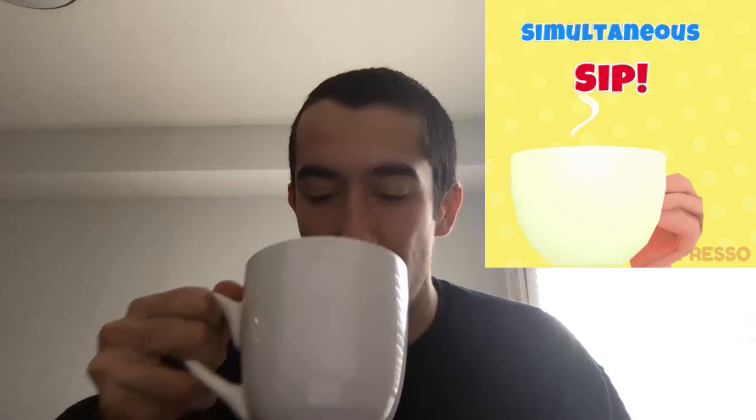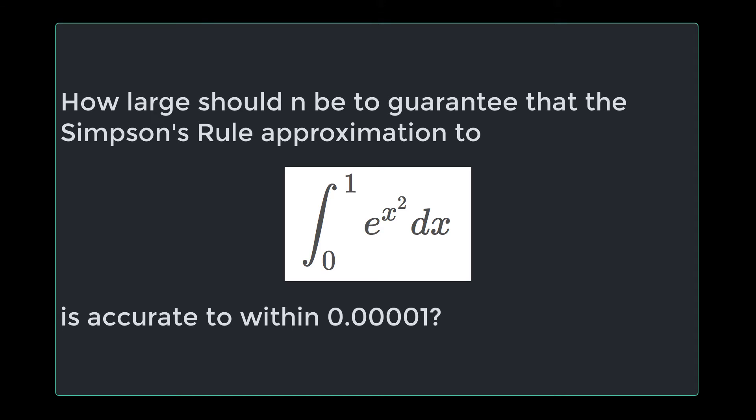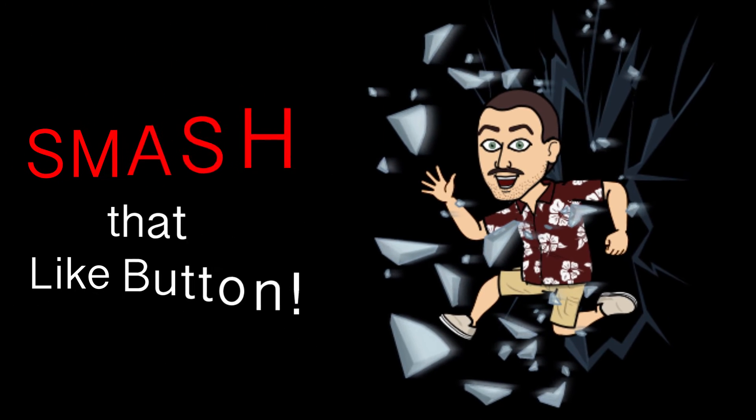If you're ready to do math today and you have your coffee ready, join me in the Simultaneous Sim. The question we're working on today is, how large should n be to guarantee that the Simpson's rule approximation to the integral from 0 to 1 of e to the x squared dx is accurate to within 0.00001? Smash that like button and let's get started.